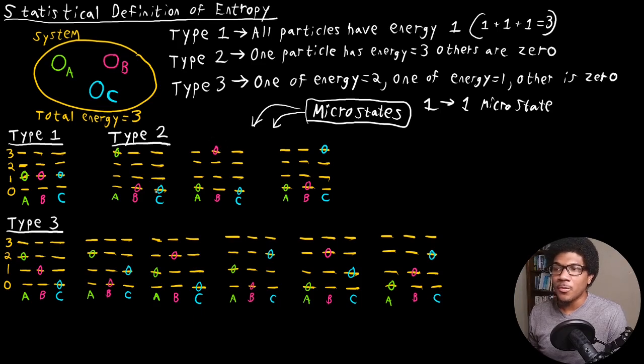However, for type two, we start to see that we can have multiple different microstates. The first microstate that I have here for type two, particle A has an energy of three and the rest of them have energy of zero. For the second one, particle B has an energy of three, the rest are zero. And then the last one is where particle C has an energy of three and the rest have zero. This gives us three total microstates. So for type two, we can have three microstates.